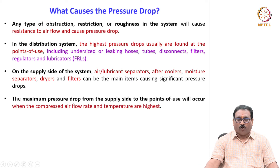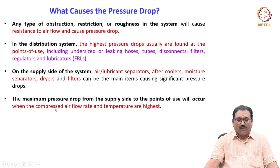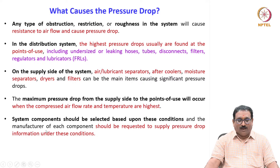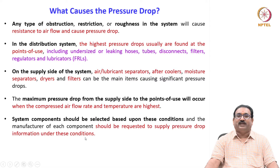The maximum pressure drop from the supply side to the point of use will occur when the compressed air flow rate and temperature are highest. System components should be selected based upon these conditions, and the manufacturer of each component should be requested to supply the pressure drop information under these conditions.